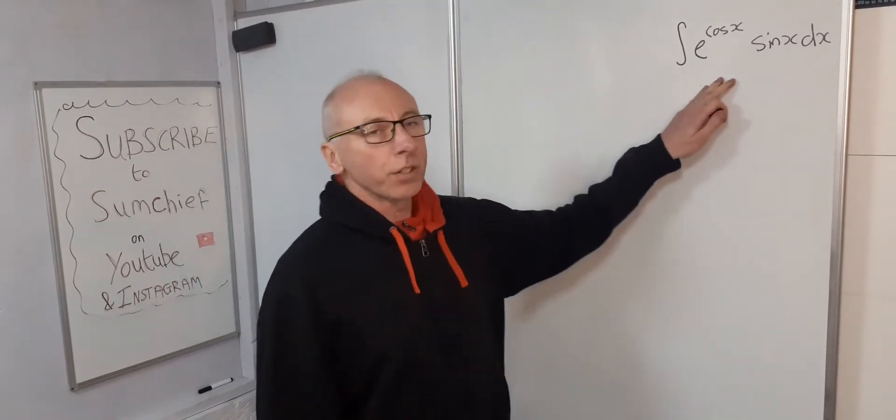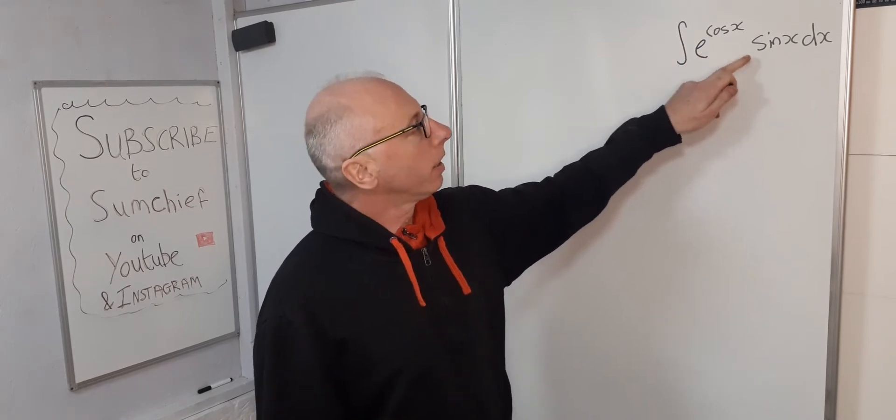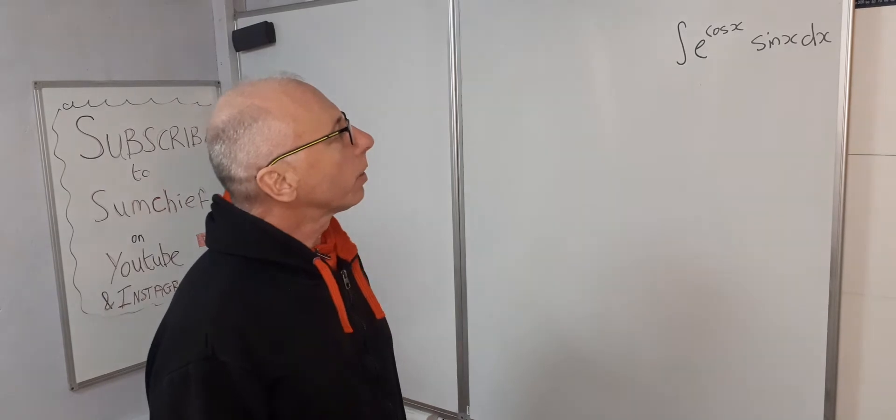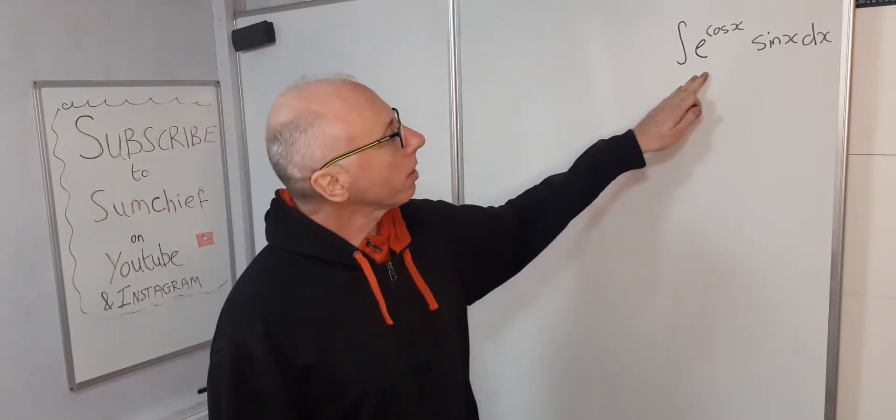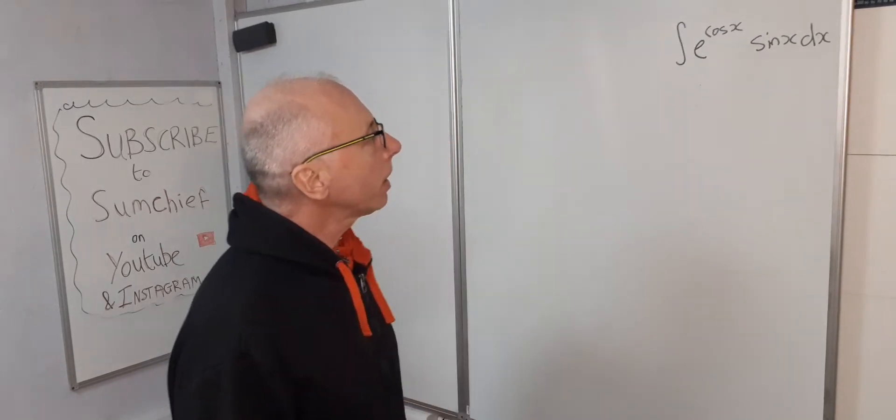Okay, so we're going to integrate e to the power of cosine x times sine x dx. So how are we going to do this? Now one option could be integration by parts because we've got one term and another term that could be a little bit messy.